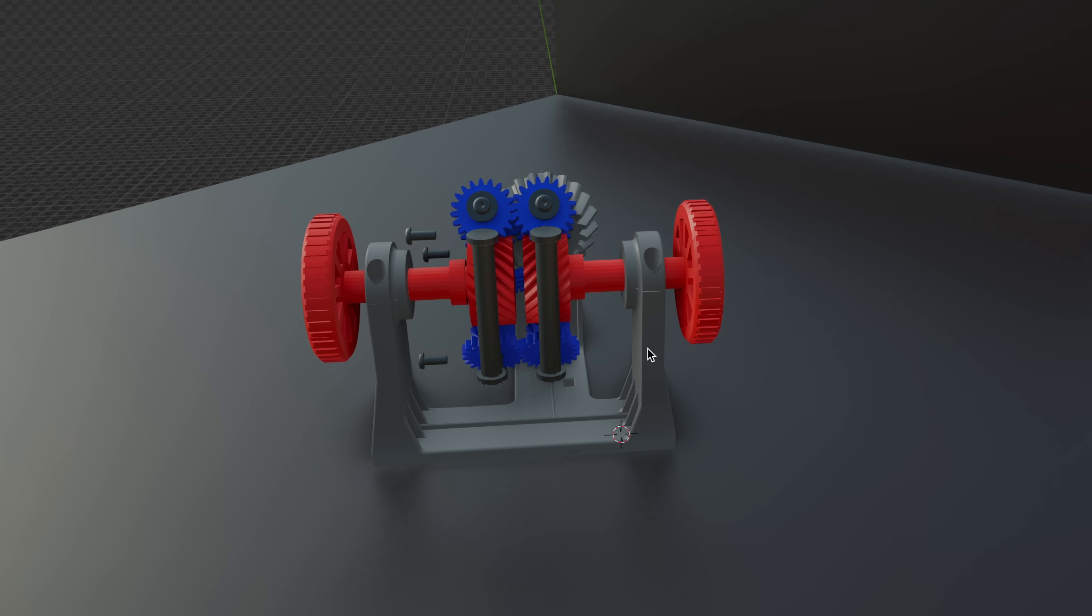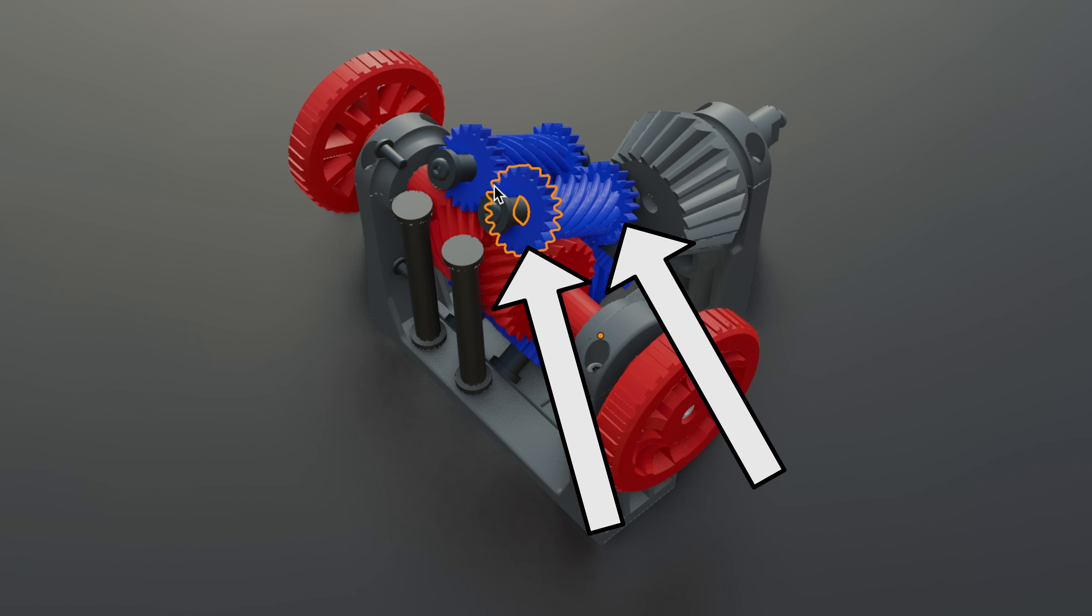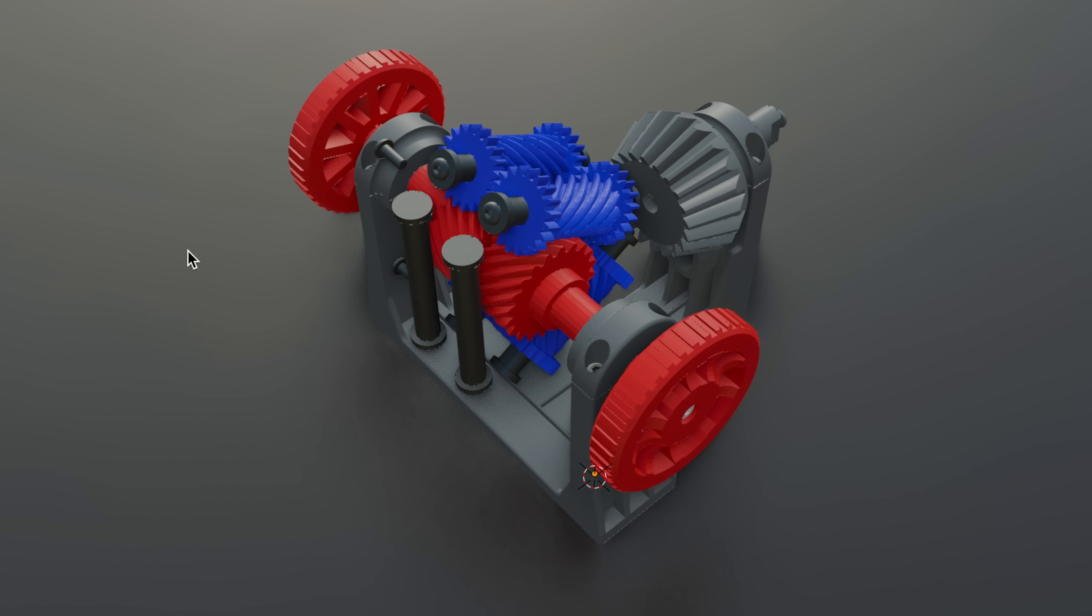When this red helical gear spins, it rotates this blue helical gear, which has two spur gears connected to the ends. These two spur gears connect with the other spur gears attached to the helical gear, which moves the red helical gear, which moves the other wheel. It's a fairly simple gear train consisting of helical gears and spur gears.